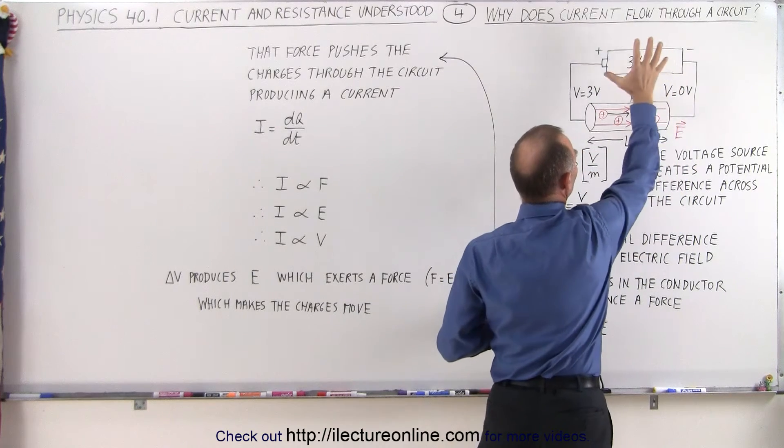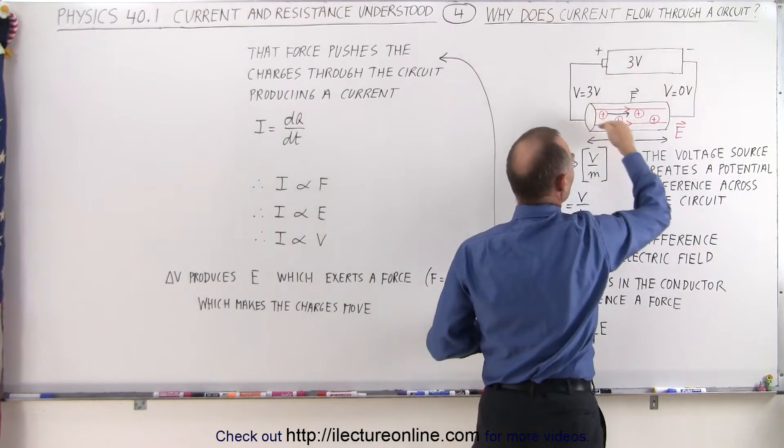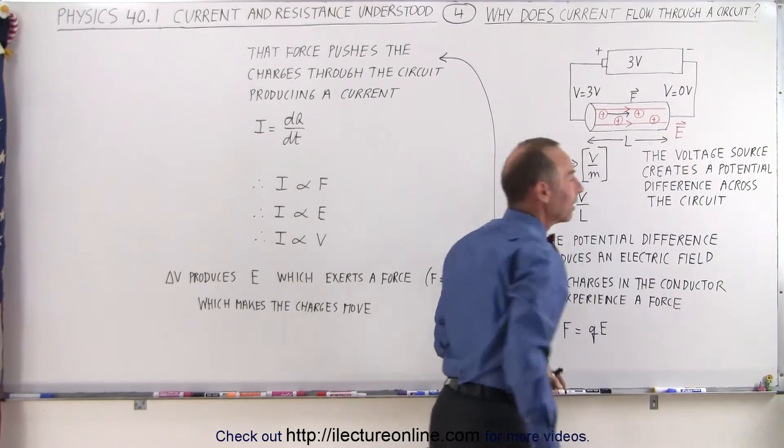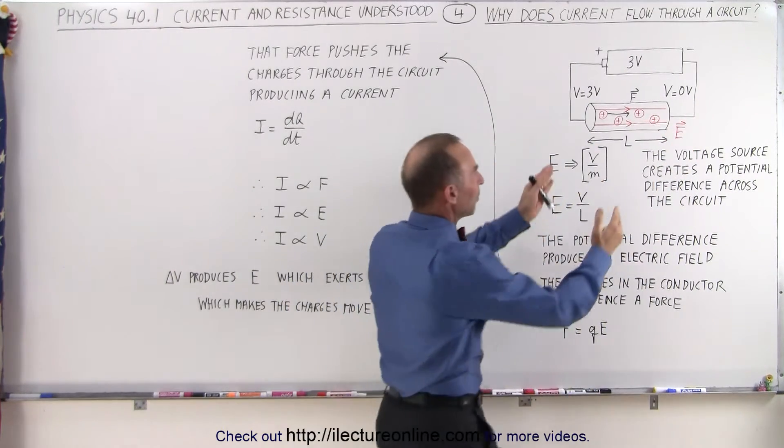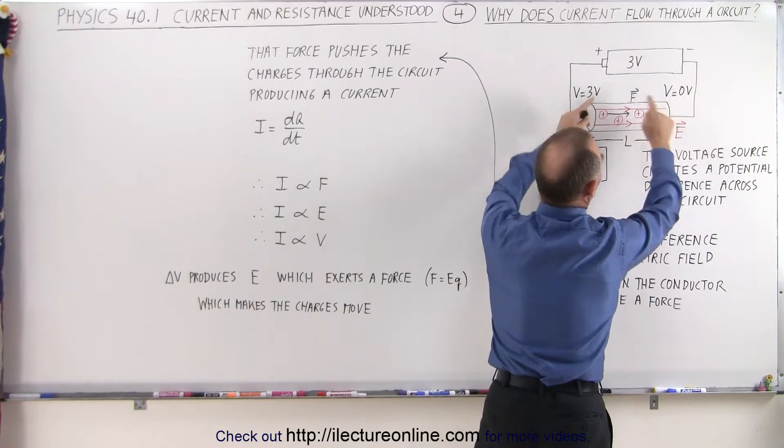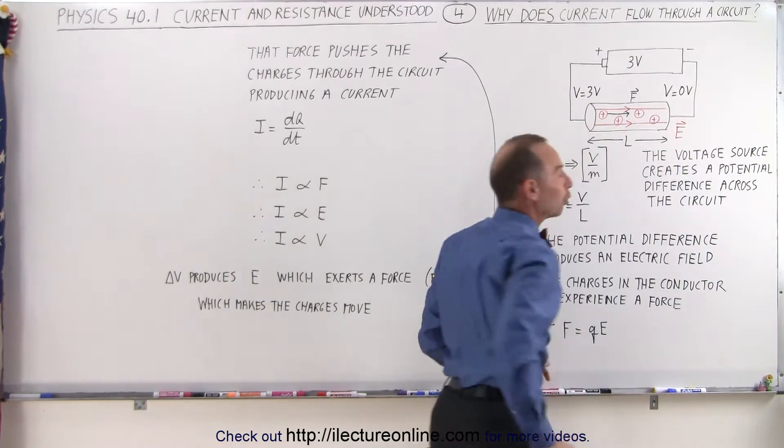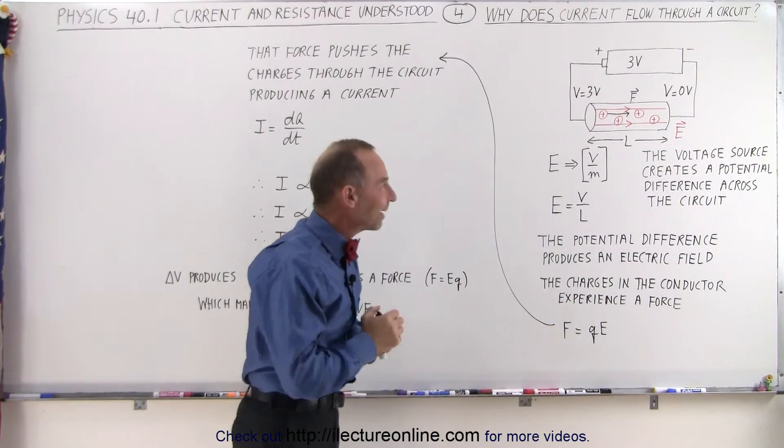So here we have an example where we have a 3 volt battery supplying a potential difference across a circuit. And so I'm assuming that this here represents the entire circuit so we can take a closer look at what's happening right inside the circuit.